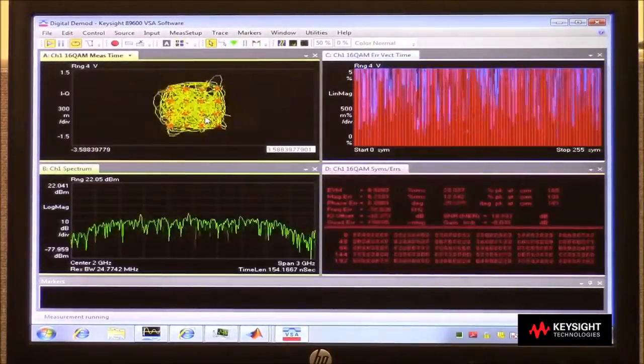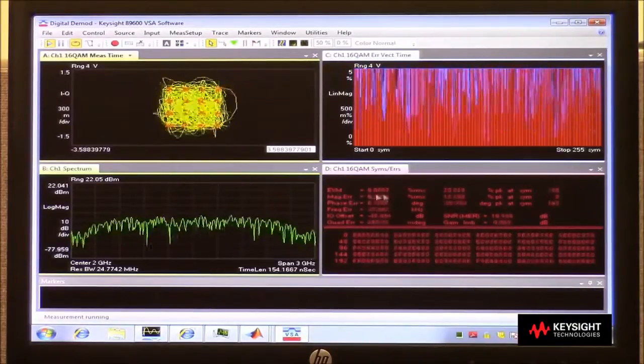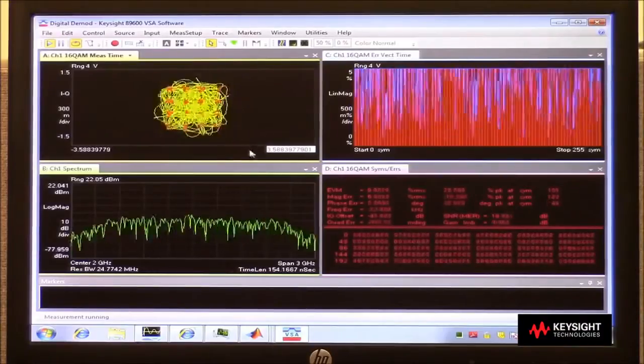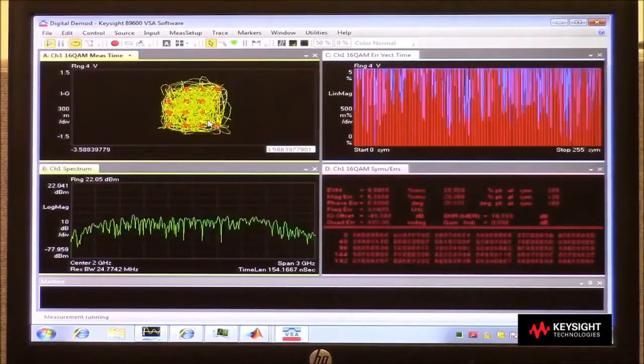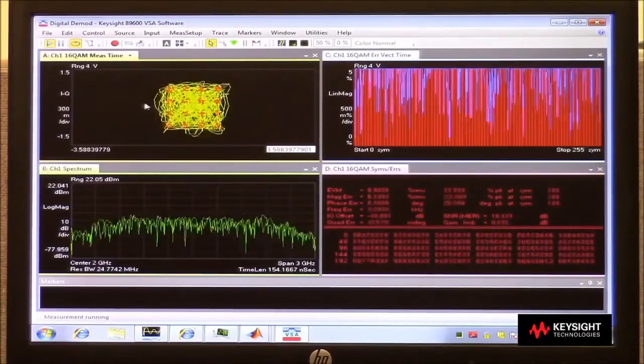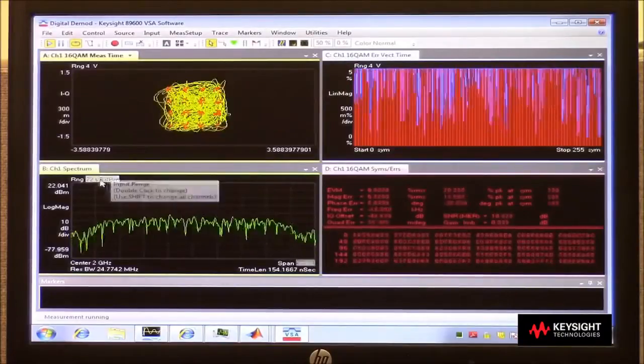It brings up a couple other measurements, one's going to be a look at error vector magnitude, and also calculated error vector magnitude. Now you'll see the constellation diagram is pretty noisy. And that's because we have not yet adjusted the sensitivity of the oscilloscope.